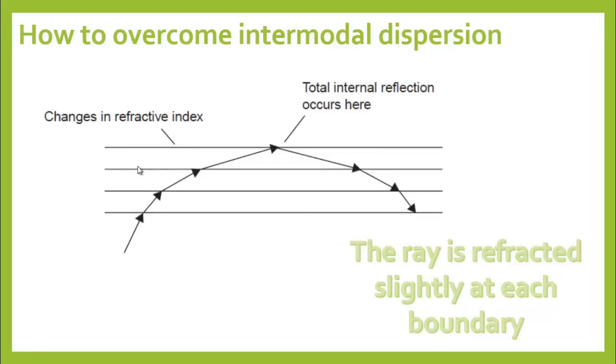We can consider the core to be made of a whole series of discrete changes in refractive index as shown in this figure. At each boundary there is a change in refractive index and the light ray is refracted slightly. Every time the ray is refracted, the angle of incidence increases. Eventually the ray will approach a layer at an angle greater than the critical angle and reflection occurs.